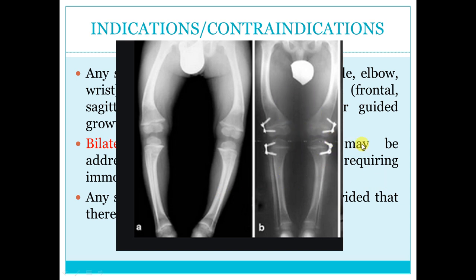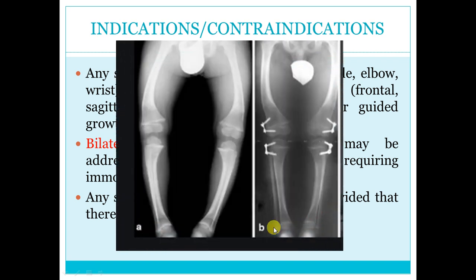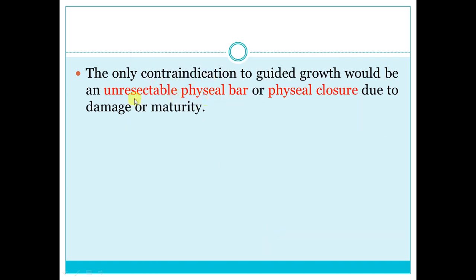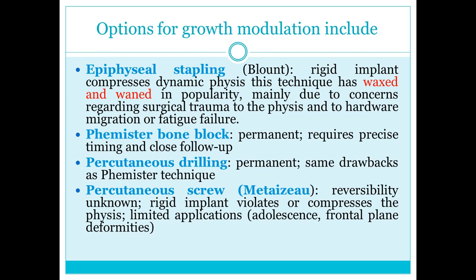The ideal indication is when there is sufficient remaining growth. Contraindication is no remaining growth, or a physeal bar. Follow-up every three to four months to monitor progress. Fixation removal within two years is needed, and you must do some overcorrection due to the incidence of recurrence after removal.